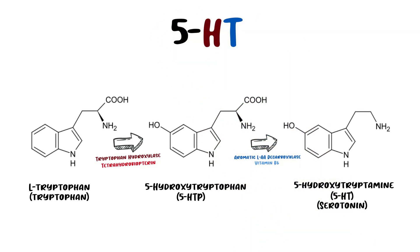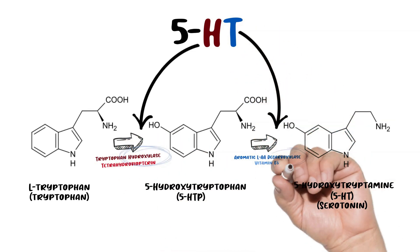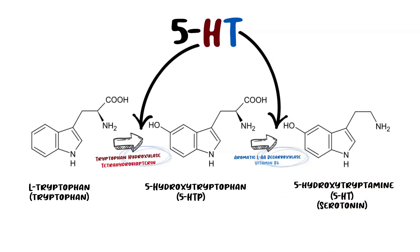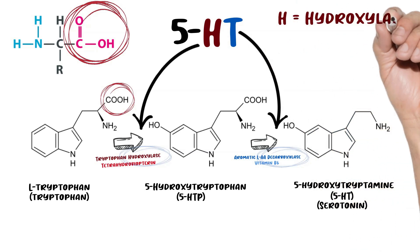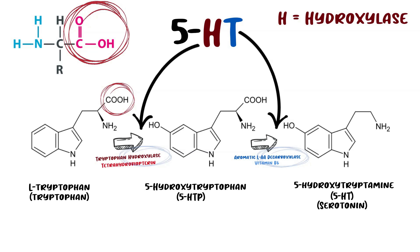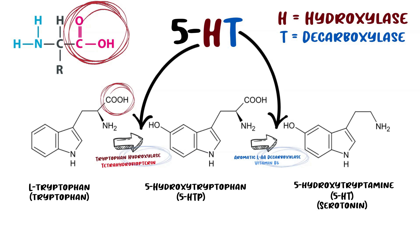Here's how to memorize this forever: serotonin is also called 5-HT, and this simple abbreviation helps us remember how it's synthesized. The 'HT' part of 5-HT helps memorize the enzymes involved. Use the 'H' to remember that the first step is a hydroxylase — tryptophan hydroxylase. Then use the 'T' to remember taking off the carboxyl group, which we know must occur because monoamines are amino acids with the carboxyl removed. The enzyme for that second step is aromatic amino acid decarboxylase.